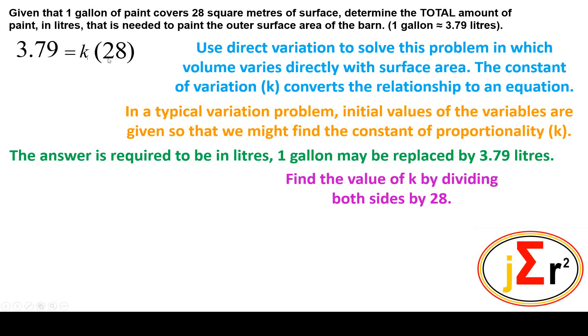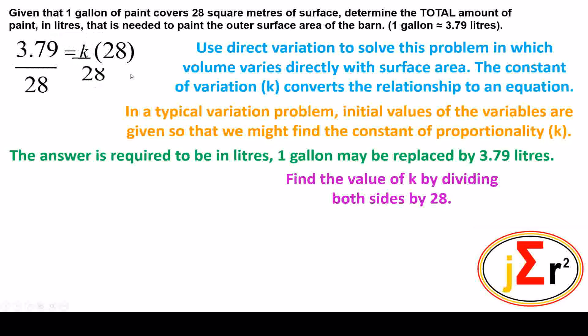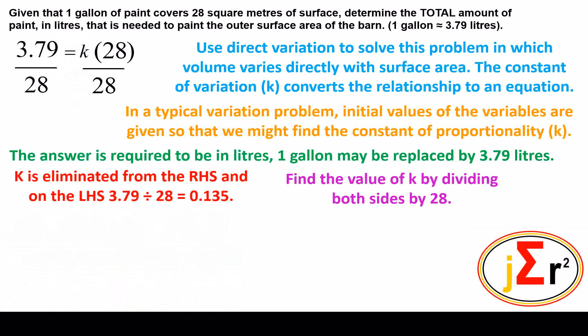Since k is being multiplied by 28, we will do the same thing on the other side in order that the equation may remain balanced. K is eliminated from the right-hand side, and on the left-hand side 3.79 divided by 28 is equal to 0.135. 28 will be eliminated by 28 by division, and we have 3.79 divided by 28 that is equal to 0.135.